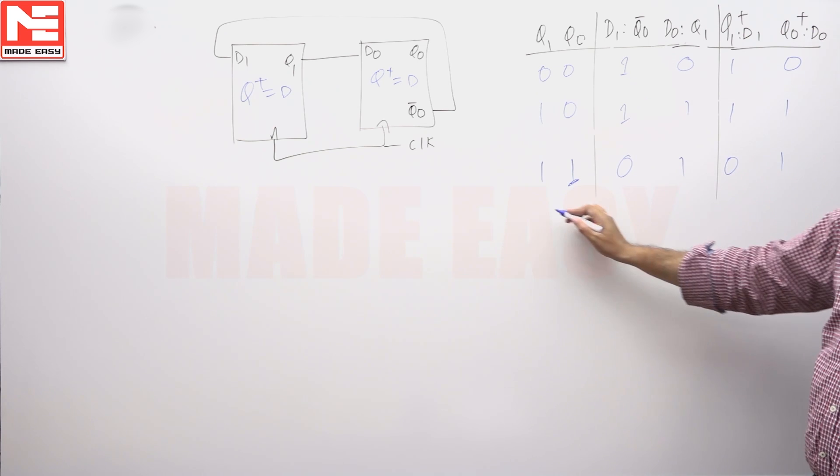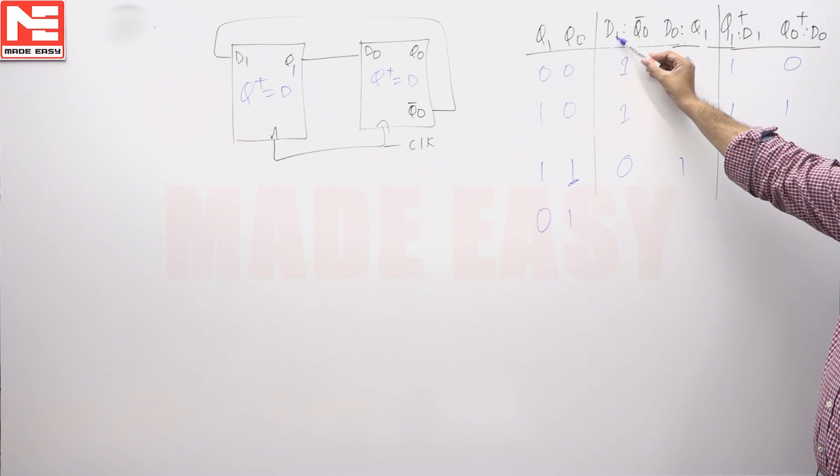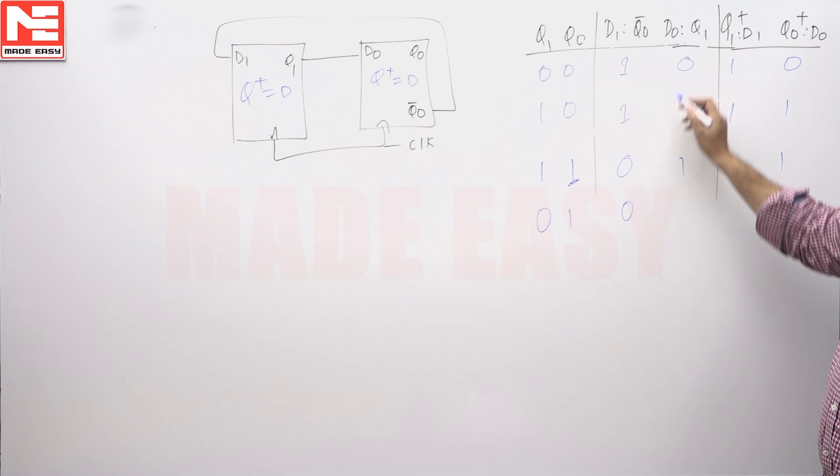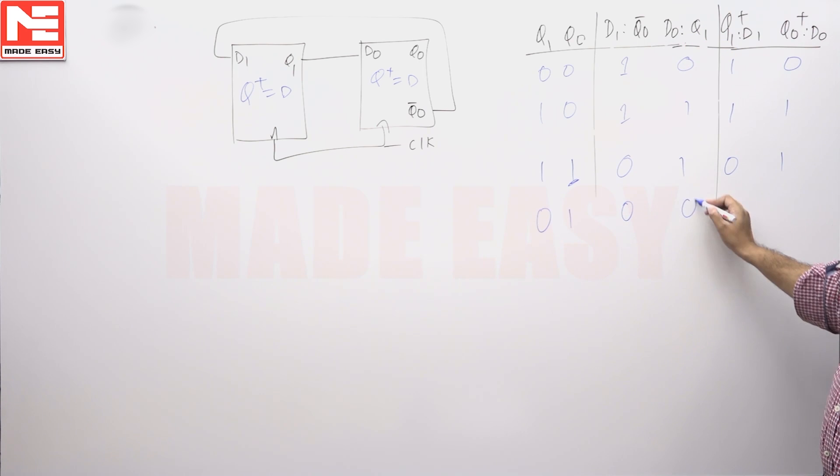So same story again for 01, let us do it. So D1 is Q naught bar, Q naught bar means 0 and D naught is Q1, Q1 means 0, so 00.